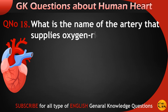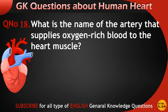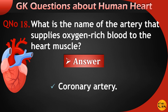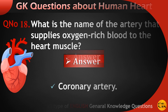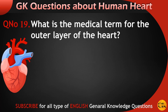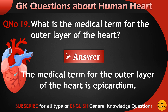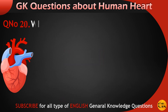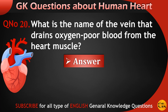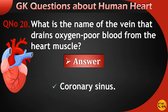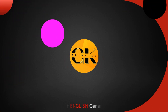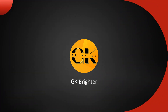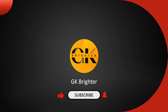What is the name of the artery that supplies oxygen-rich blood to the heart muscle? Coronary artery. What is the medical term for the outer layer of the heart? The medical term for the outer layer of the heart is epicardium. What is the name of the vein that drains oxygen-poor blood from the heart muscle? Coronary sinus. If you liked the video, please like, share, and subscribe.